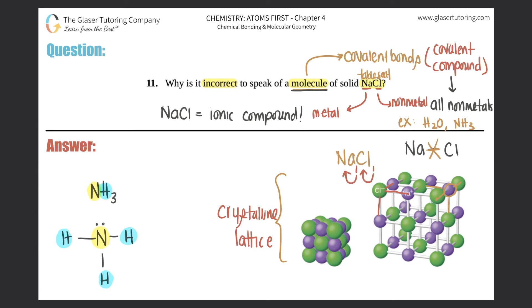So that's why it's incorrect to say that NaCl is a molecule because molecules are only used for covalent compounds. So this is covalent. It's a molecule. This is an ionic compound. So that's the crystal lattice. So that's the difference.